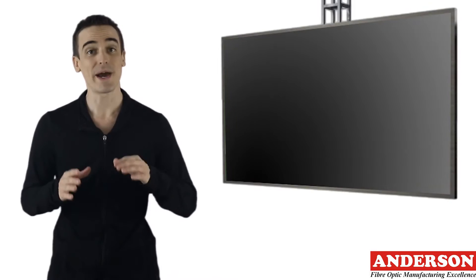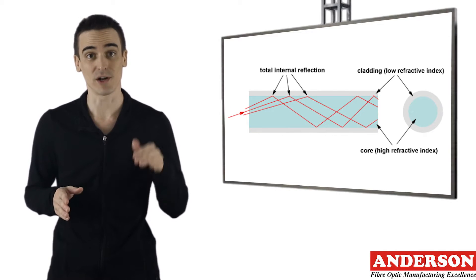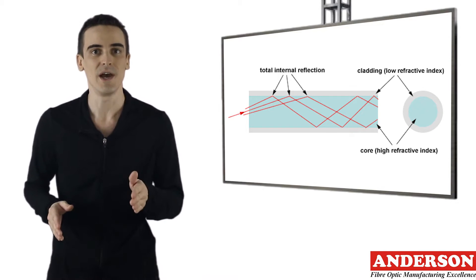Light travels down a fiber optic cable by bouncing repeatedly off the walls. Each tiny photon or particle of light bounces down the fiber like a person sliding down a large enclosed water slide at a fun park. Now you might expect a beam of light traveling in a clear glass fiber simply to leak out of the edges.